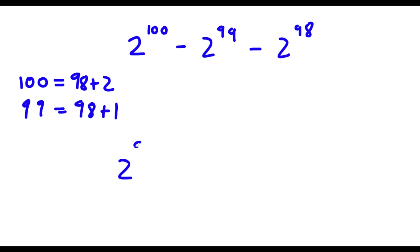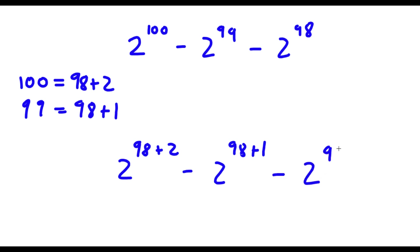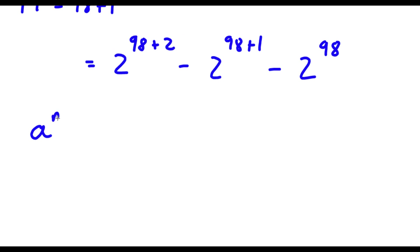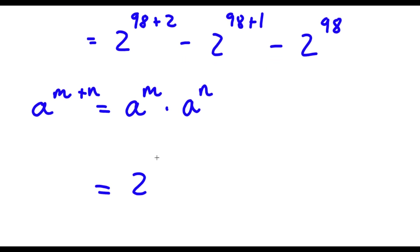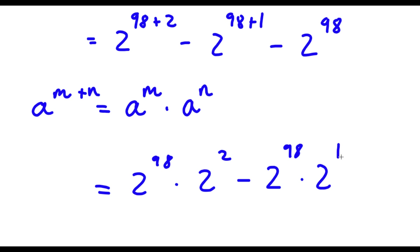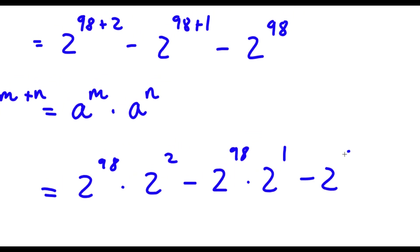...I get 2 to the power of 98 plus 2, minus 2 to the power of 98 plus 1, minus 2 to the power of 98. Now if I have something in the form a to the power of m plus n, this is equal to a to the power of m times a to the power of n. So 2 to the power of 98 plus 2 equals 2 to the power of 98 times 2 to the power of 2. And minus 2 to the power of 98 plus 1 equals minus 2 to the power of 98 times 2 to the power of 1. And 2 to the power of 98, we're simply going to leave that by itself.